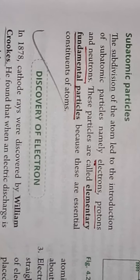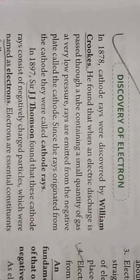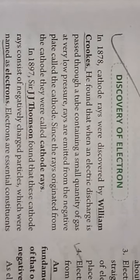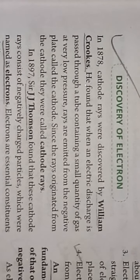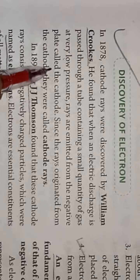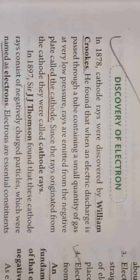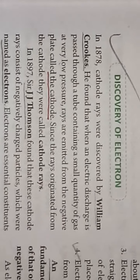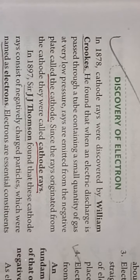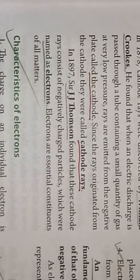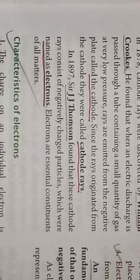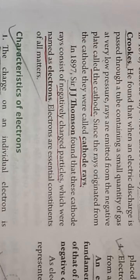We will discuss the discovery and properties of the electron. In 1878, cathode rays were discovered by William Crookes. He found that when an electric discharge is passed through a tube containing a small quantity of gas at very low pressure, rays are emitted from the negative plate, which is called the cathode. Since the rays originated from the cathode, they were called cathode rays. In 1897, Sir J.J. Thomson found that these cathode rays consist of negatively charged particles, which were named electrons.